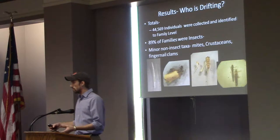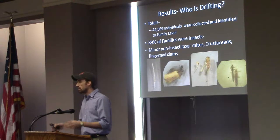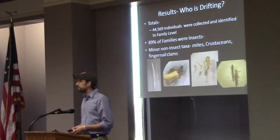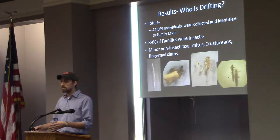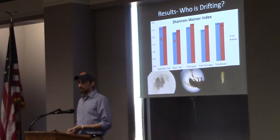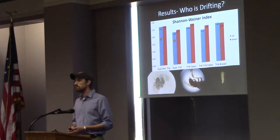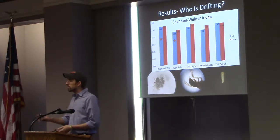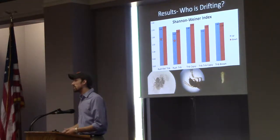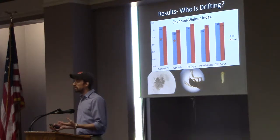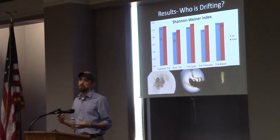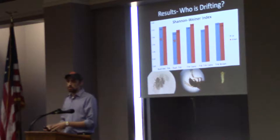In total, roughly 44,000 individuals were collected, most of them being insects — things with six legs. We also found mites, which are arachnids, crustaceans, snails, clams, and scuds. Looking at who is drifting, we used the Shannon-Wiener Index for diversity. The two bars with stars were our fishless sections. You can see there's really not much difference in the diversity between streams. Blue is upstream, red is downstream. There's really not much difference in the actual taxa of invertebrates we're finding in each stream.